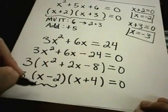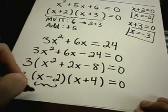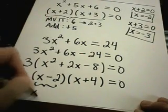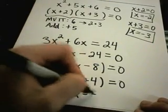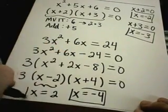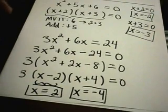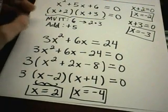And just like before, if I set each individual piece in parentheses equal to 0, I'll get x equals 2 being a solution, and I'll get x equaling negative 4 as another solution. Okay, so this is the basic idea with the quadratic equation.